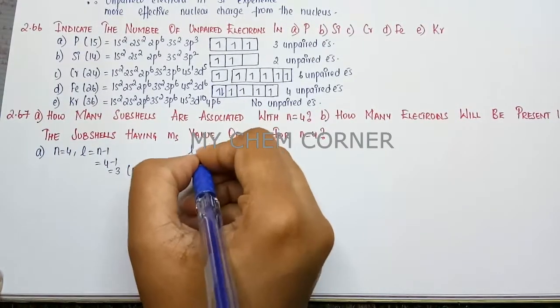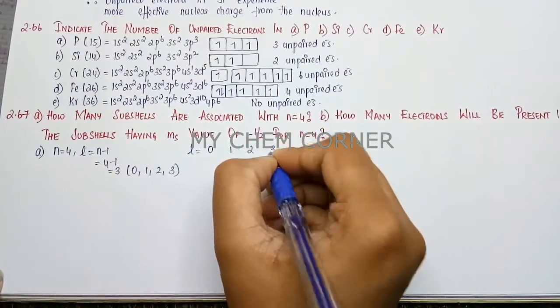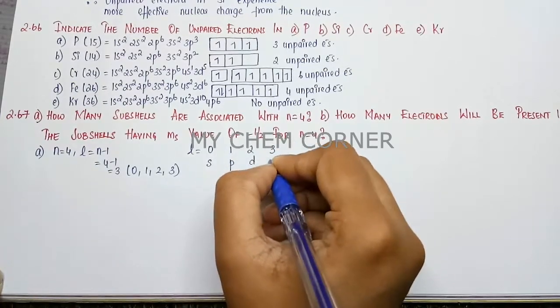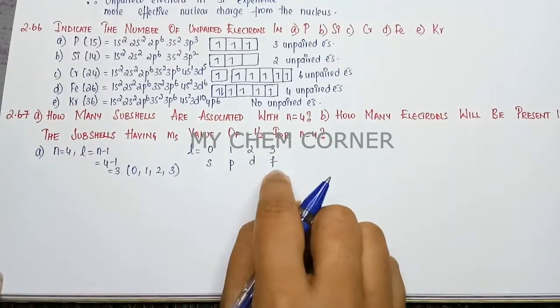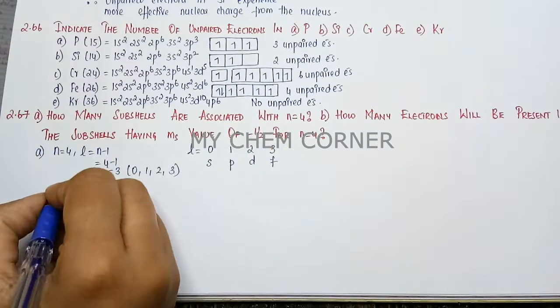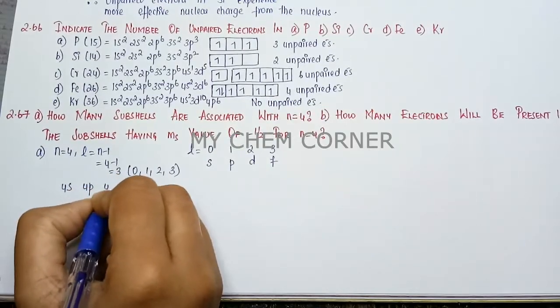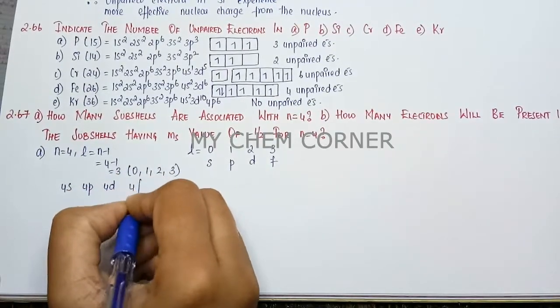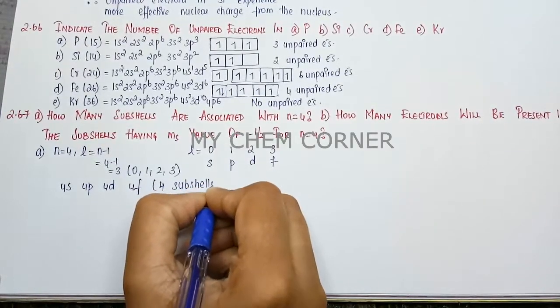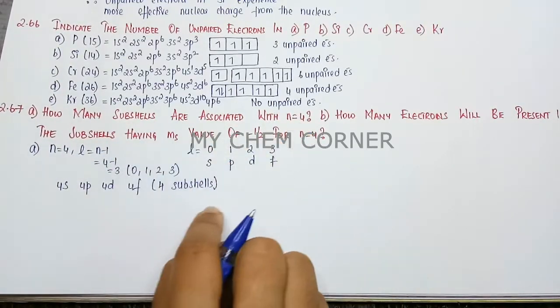So when l is 0, 1, 2 and 3, the subshell is s for 0, for 1 it is p, for 2 it is d and for 3 it is f. So here we can say that we have 4s, 4p, 4d and 4f that makes a total of 4 subshells. So that answers the first question.